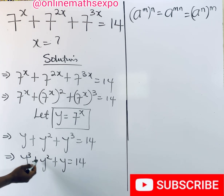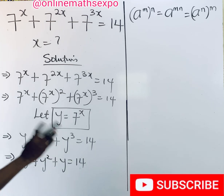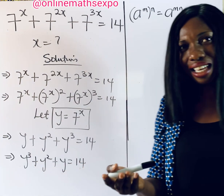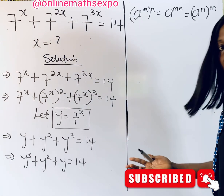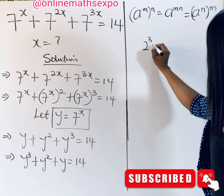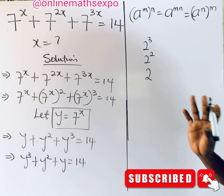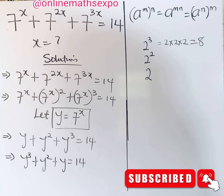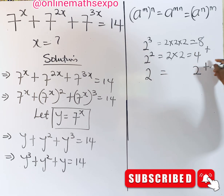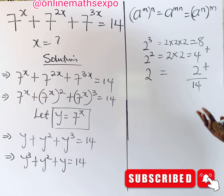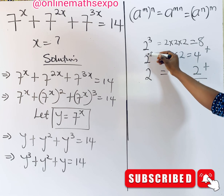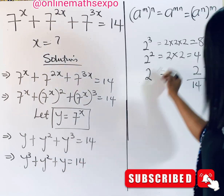Observe that this is the same number cubed, squared, and as itself — added together gives 14. Ask yourself: what number placed in this manner equals 14? Let's look at 2. If we raise 2 to the power of 3, that's 8; 2 squared is 4; and 2 itself is 2. Adding: 8 plus 4 plus 2 gives us 14. So y equals 2 works here.